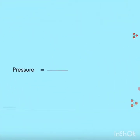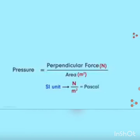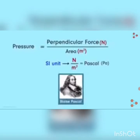Pressure is defined as the perpendicular force acting on the surface of an object per unit area on which it is acting — force acting per unit area. The SI unit of force is Newton (N) and that of area is meter squared, so the SI unit of pressure is Newton per meter squared, also called Pascal, denoted by Pa. This name honors the French scientist Blaise Pascal for his contributions in hydrostatics and hydrodynamics.